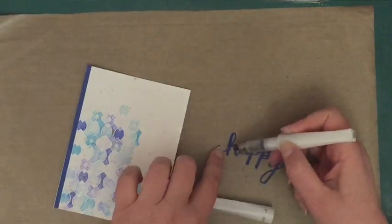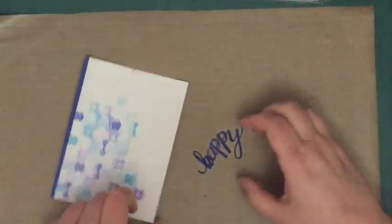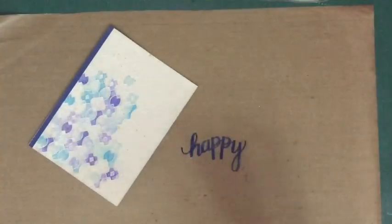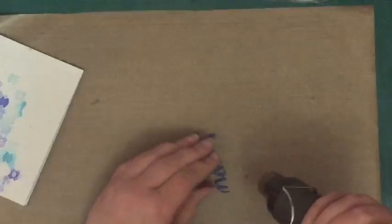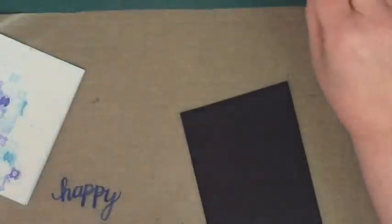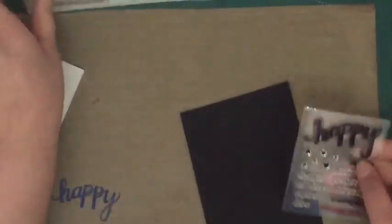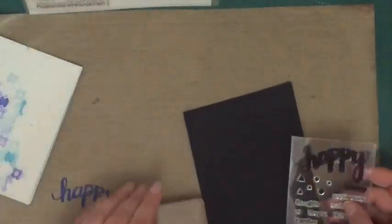Now this I've decided to add some Wink of Stella to as well, but as I've done that and this die cut is quite movable, it moves all over the place, and when I got it wet it did so even more. So I decided to heat set that as well just to make it less flimsy.